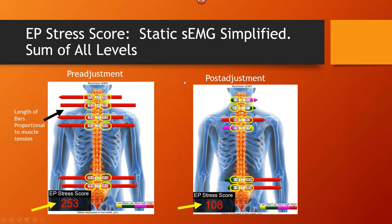With the EP Stress Score, all we're doing is simplifying the static EMG by summing — adding up all the readings. These are all in microvolts. This is showing an example of a pre- and post-adjustment static scan: the EP Stress Score went from 253 prior to adjustment. We did an adjustment, and 10 to 15 minutes later did the test again. It dropped significantly from pre to post, showing how easy it is to read this by looking at the EP Stress Score.